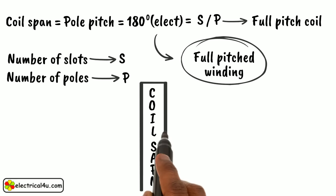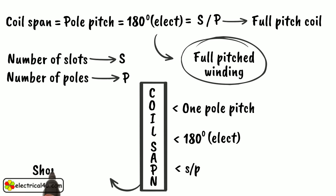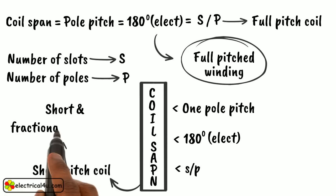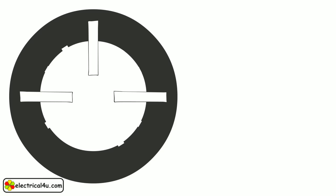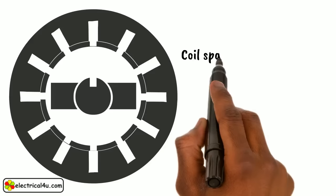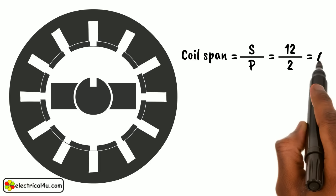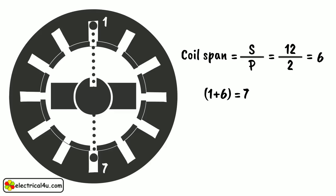If the coil span is less than one pole pitch, that is less than 180 degree electrical or less than the number of slots per pole, then it is called a short pitch coil and the complete winding is called as short pitch winding or fractional pitch winding. For example, consider a three phase, two pole, twelve slot alternator. The coil span for full pitched winding is equal to s by p, that is twelve by two which is six. So if one side of the coil is placed in slot one, then the other side of the coil must be placed in slot one plus six, or seven.